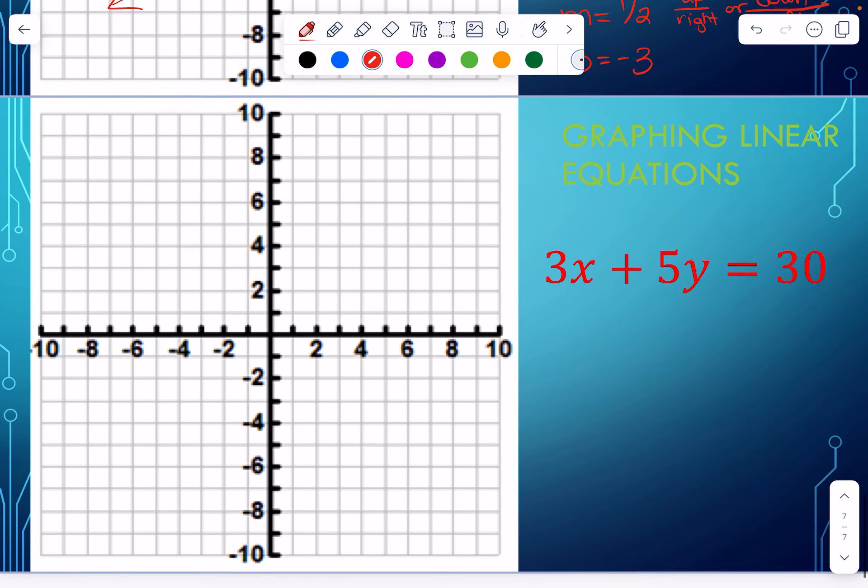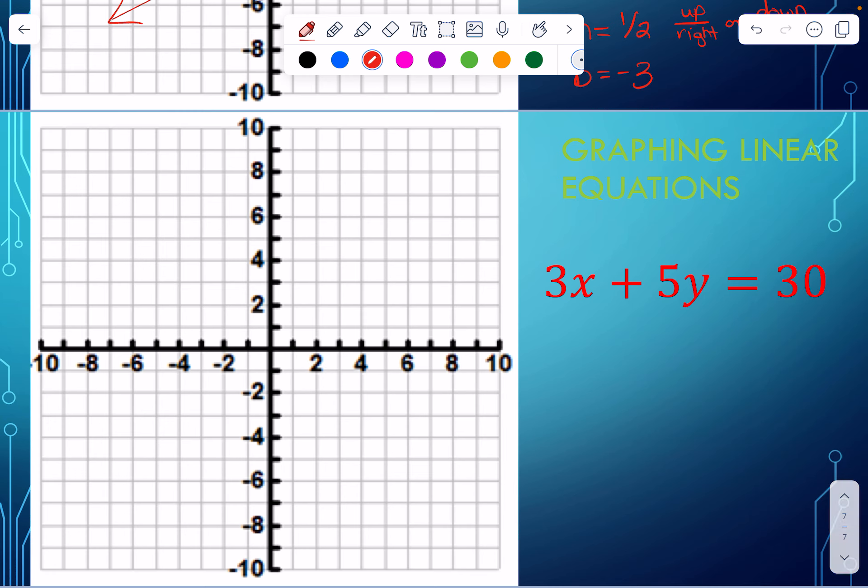Let's try one more here. So the first thing I'm going to do is I'm going to solve it for y. So I'm going to subtract the 3x from both sides. Then I'm going to divide everything by 5. So that's going to leave me y equals negative 3 fifths x plus 6. So my slope is negative 3 fifths. My y-intercept is 6.